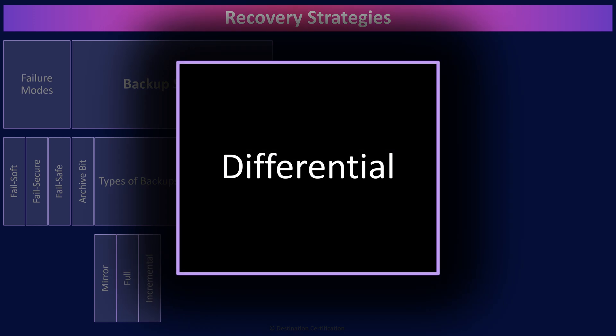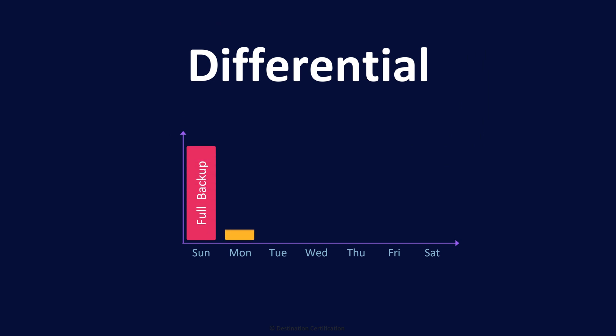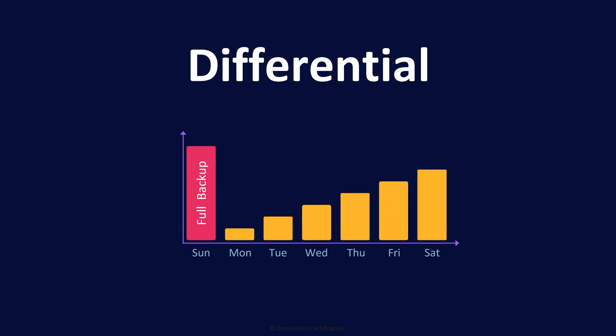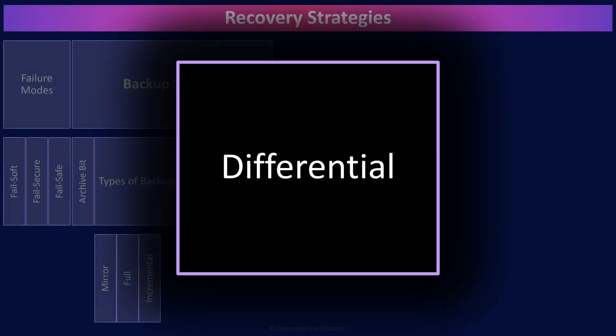Differential backups are where we back up changes since the last full backup. The archive bit is left set to one for every file that is backed up during a differential backup, which means during every differential backup you're backing up all new and modified files since the last full backup. This uses more storage space, but it speeds up recovery times — the maximum number of tapes you'll ever need to pull is two: the most recent full backup and the most recent differential.